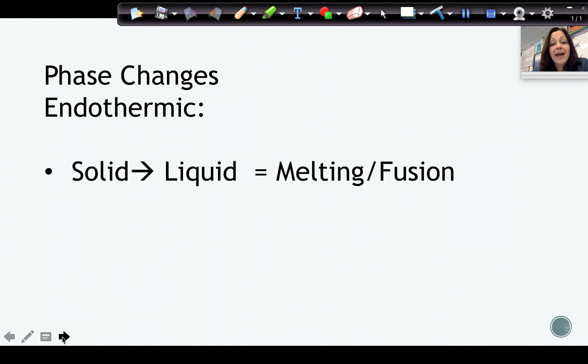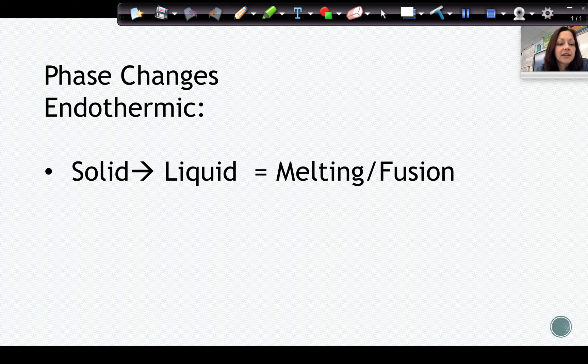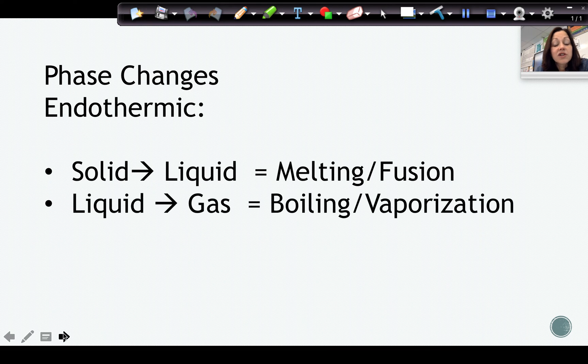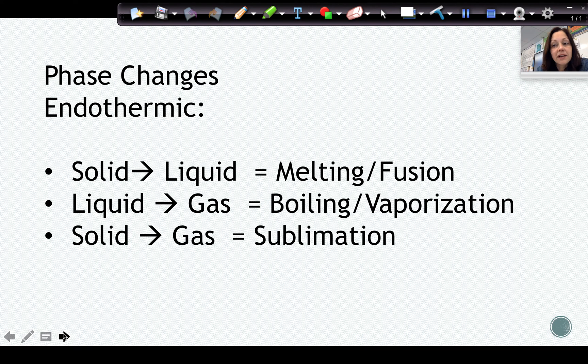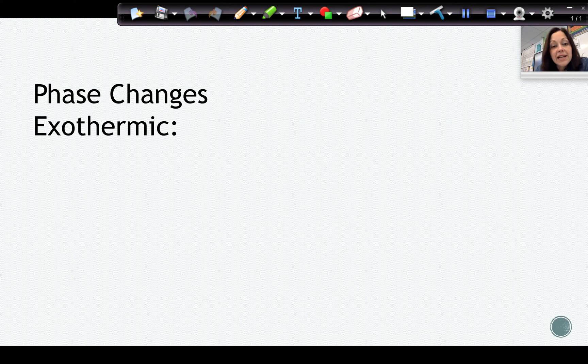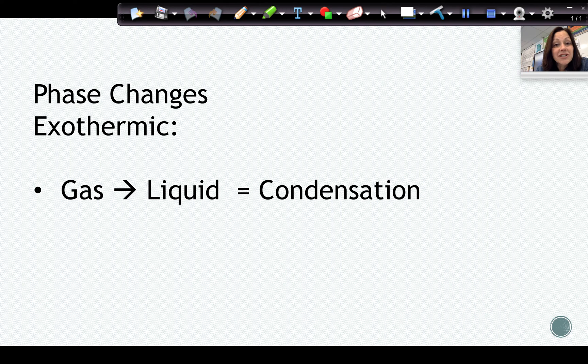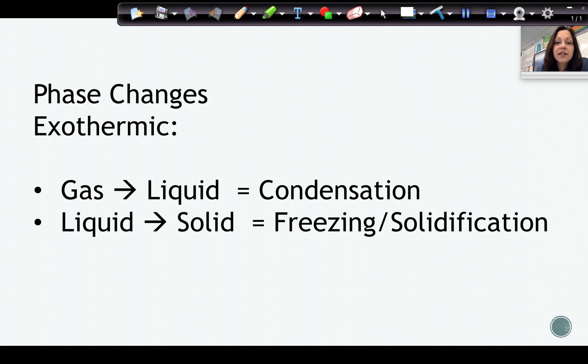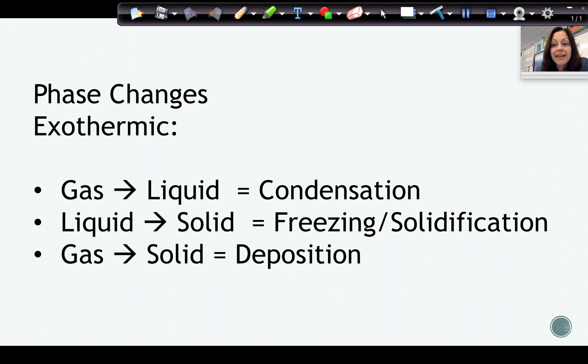When we talk about phase changes, we have endothermic phase changes that require an addition of energy. Solid to liquid is called melting, also called fusion. Liquid to gas is called boiling or vaporization, and solid to gas, skipping the liquid in between, is called sublimation. Our exothermic phase changes are going to release energy as this happens. Gas to liquid is called condensation, liquid to solid is called freezing or solidification, and gas to solid is called deposition, although I haven't seen this one on the regents exam, so this is just a fun fact here.